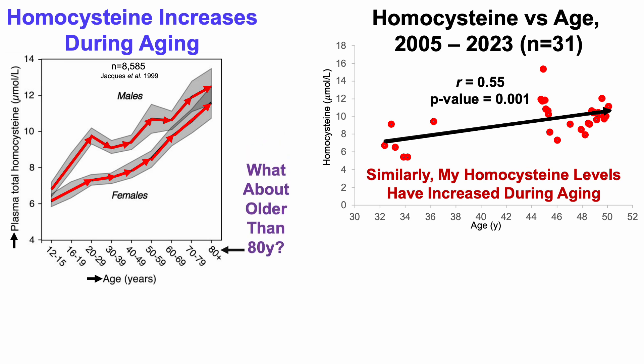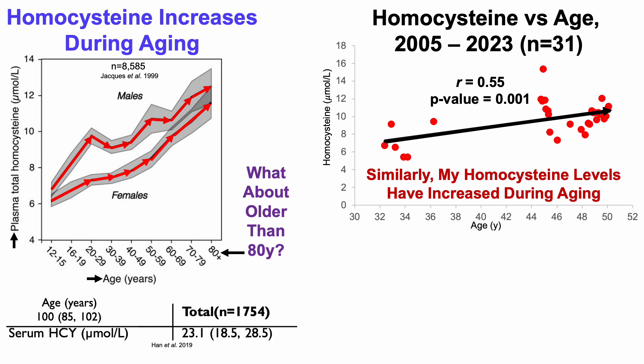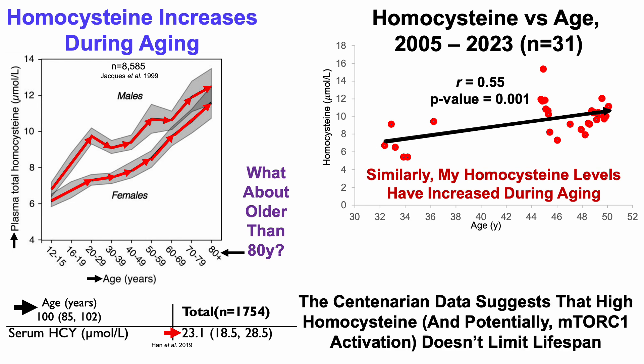On the left, I didn't show what happens to homocysteine in people older than 80 years old. And that's what we can see here. In this study of more than 1,700 centenarians — with a median age of 100 years — we can see that serum levels of homocysteine were almost double what they are on the chart above, at 23.1 micromolar.